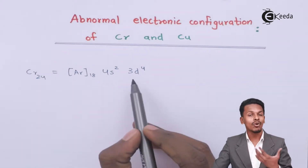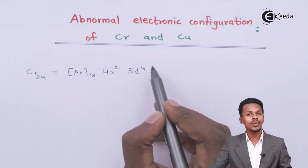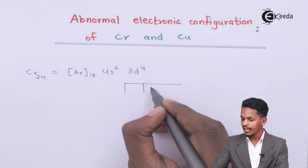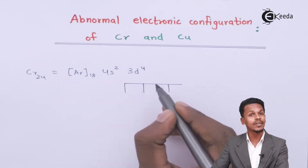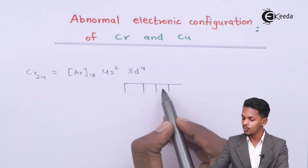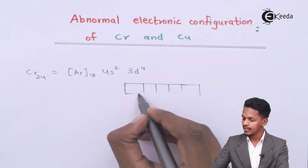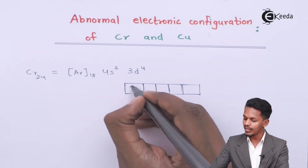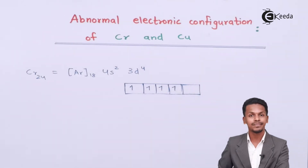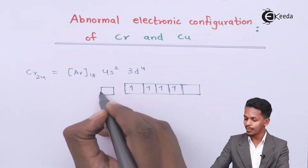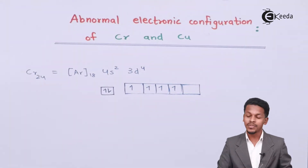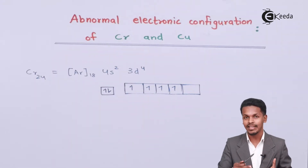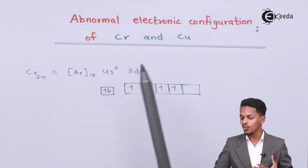But this is not the valid electronic configuration. The reason is that the D orbital consists of 4 electrons here, while the D subshell consists of 5 orbitals. So we can see orbitals 1, 2, 3, 4, and 5. The D orbital has 4 electrons, and the 4s orbital has 2 electrons. It has also been observed that the energy difference between the 3d and 4s orbitals is very small, so one of the electrons can be shifted to the D orbital.